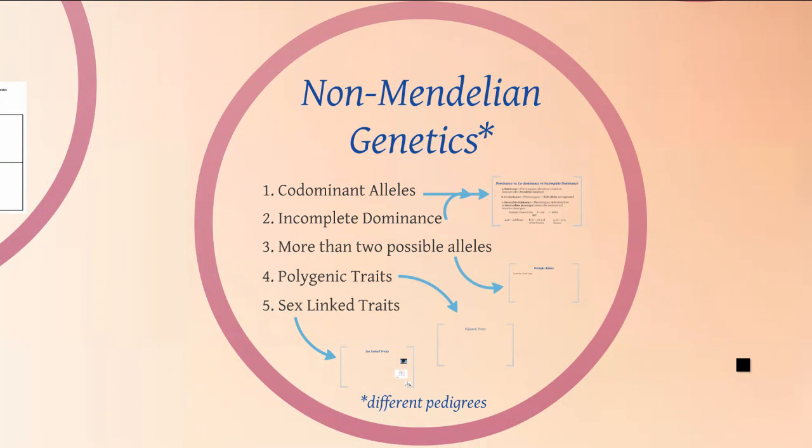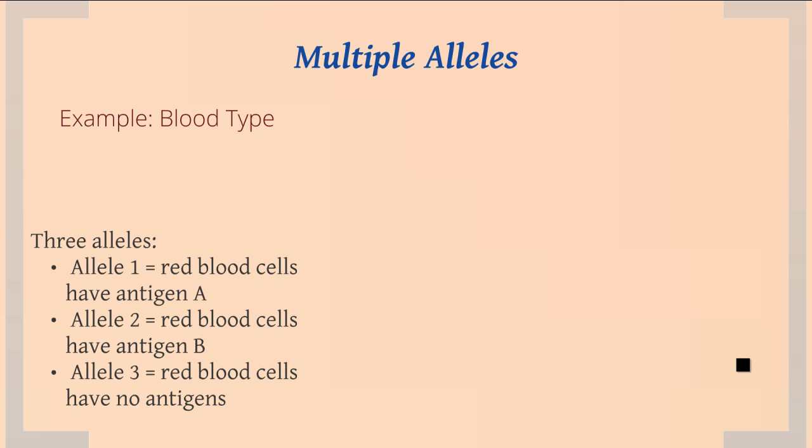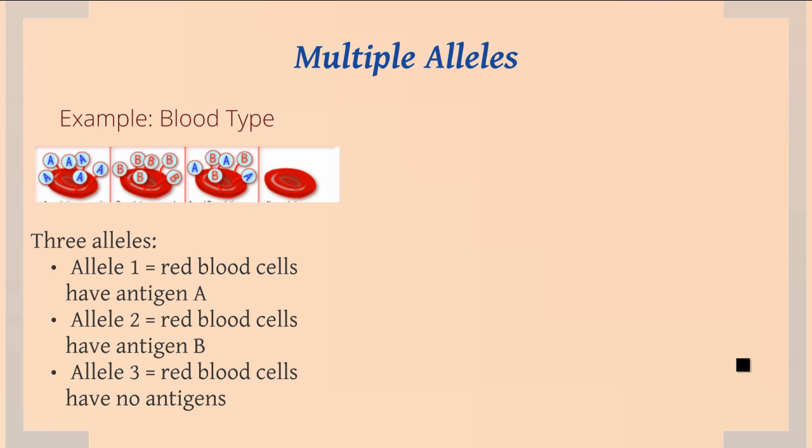The next kind of non-Mendelian genetics is the idea that there are more than two possible alleles. Blood type is a really nice example of this. There are three different possible alleles, though your genotype only has two. With allele one, your red blood cells produce antigen A — a protein sticking out of the cell membrane. If you have allele two, your red blood cells produce antigen B. And if you have allele three, your red blood cells don't produce a specific antigen. You can have all these different combinations.